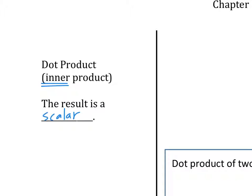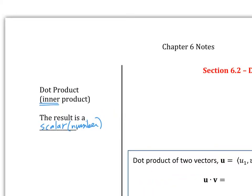Sometimes they'll say: what is the inner product of these two vectors? Or: what is the dot product? The result of a dot product is a scalar — a number. A lot of times people forget and multiply two vectors together as a dot product and get a vector out. That is impossible. You have to get a number out.